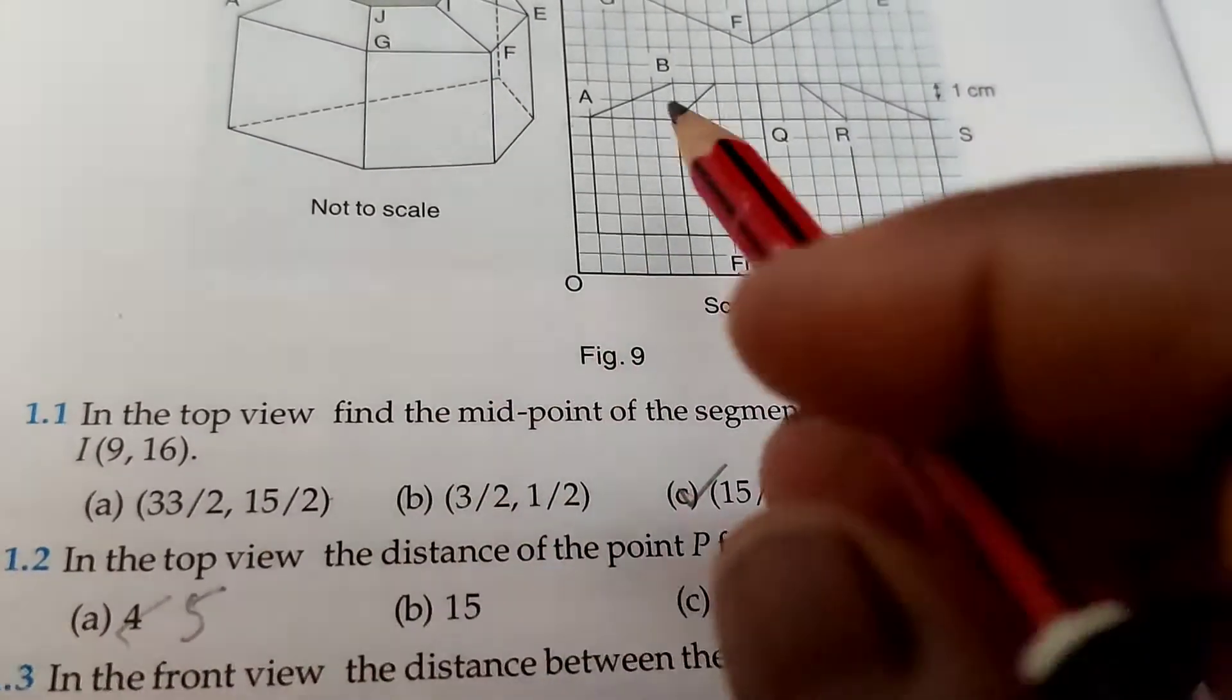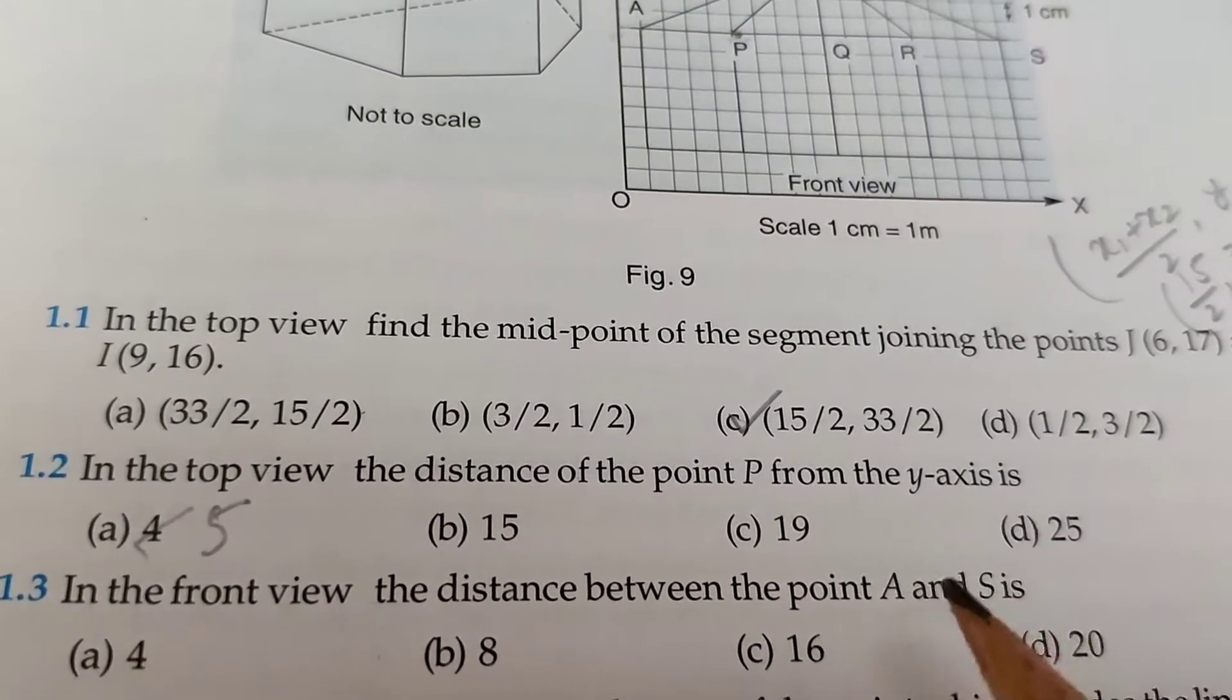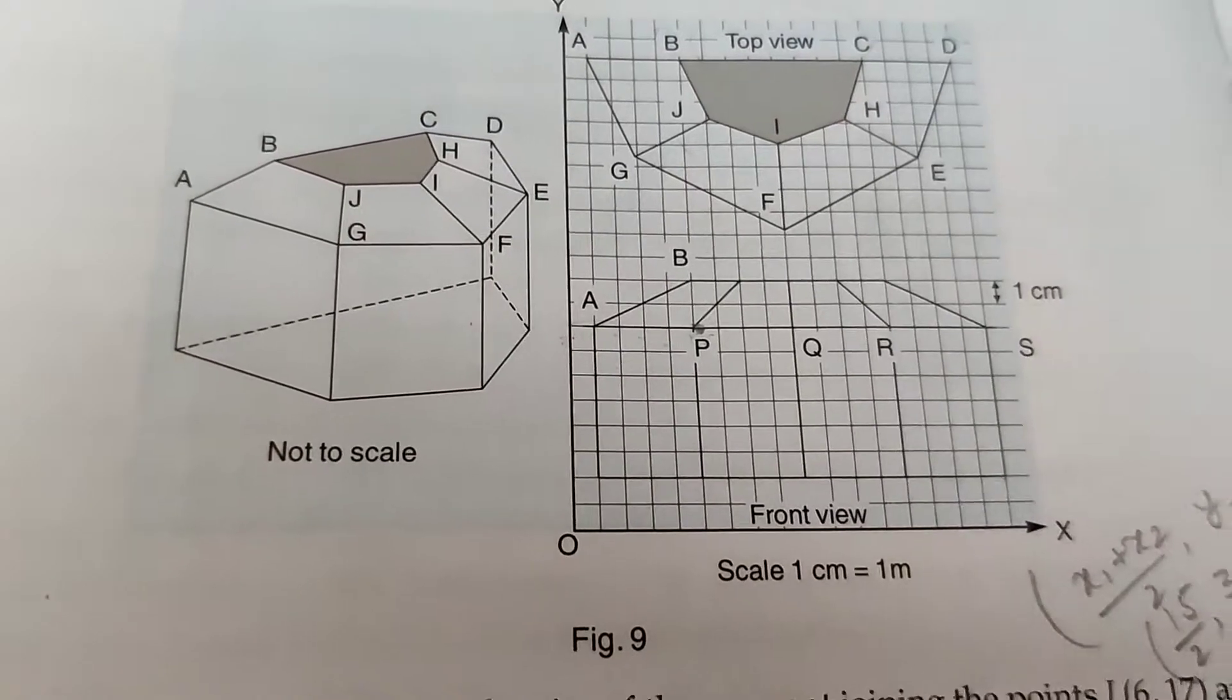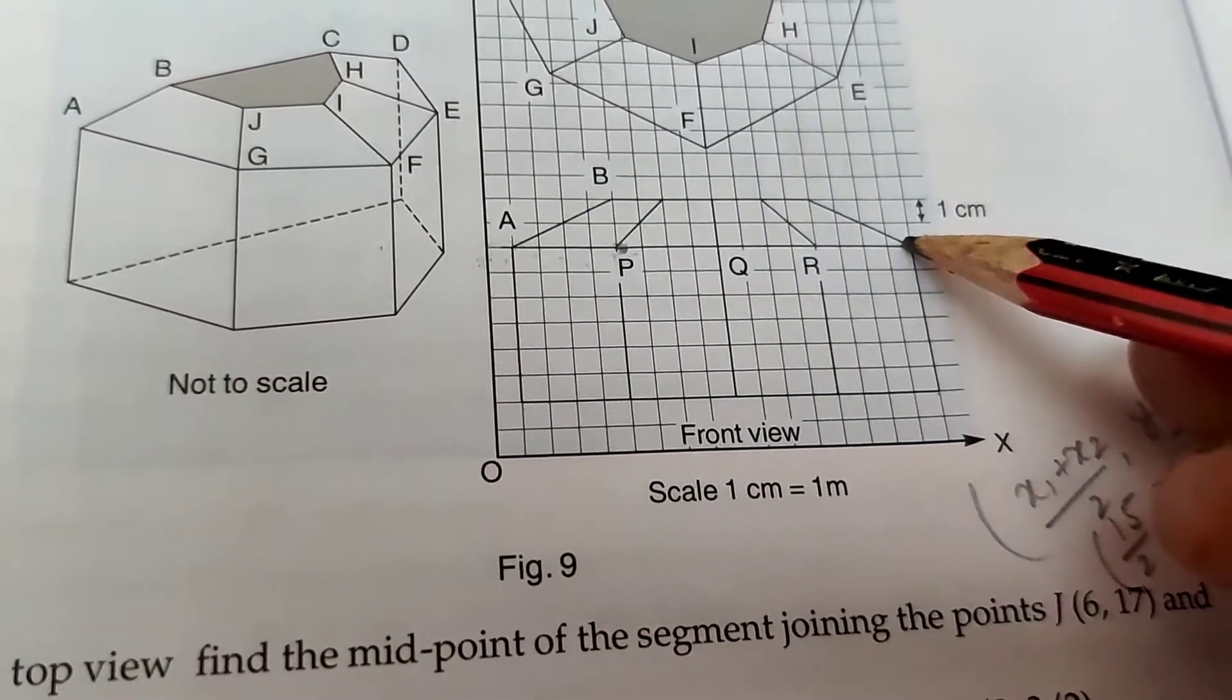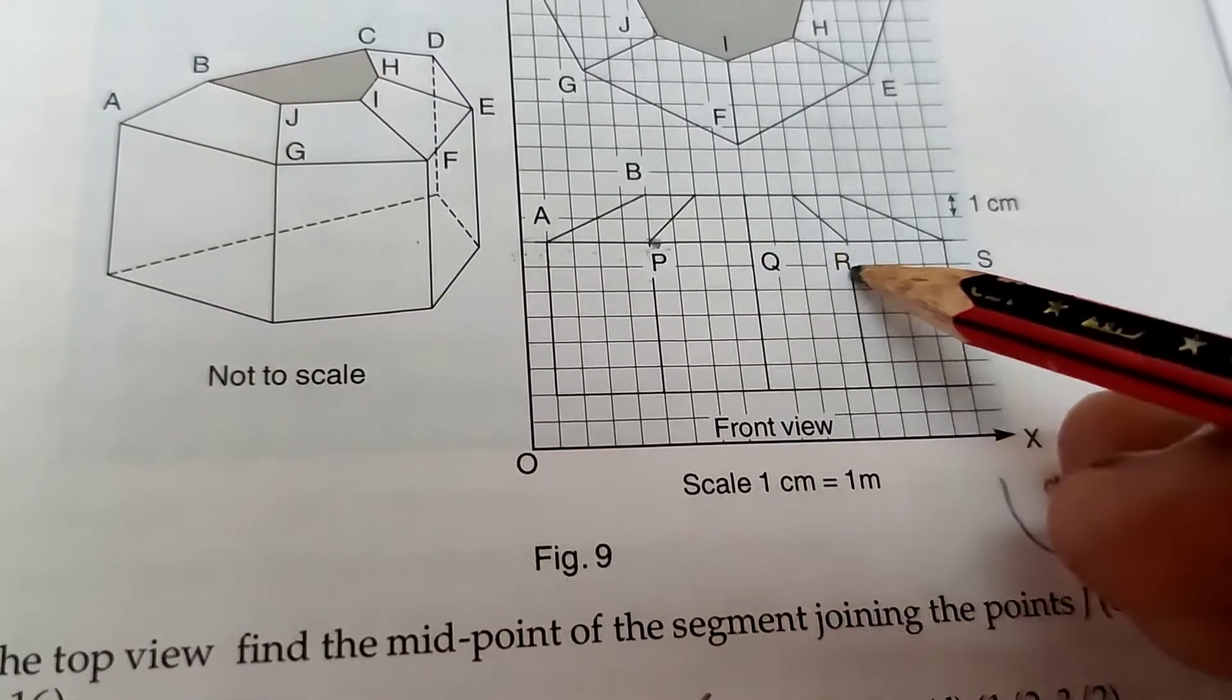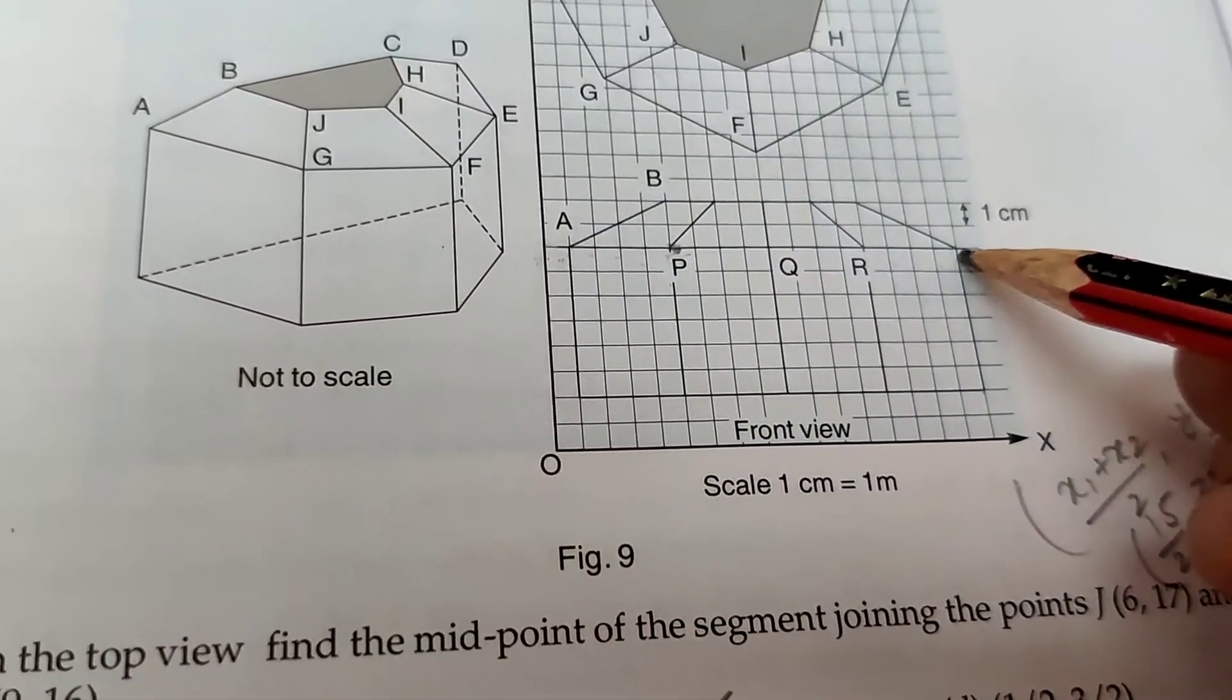In the front view, the distance between point A and S. This is point A and this point is S. Now count the units between A and S: 4, 8, 12, and 4 more is 16. The distance between A and S is 16 units.